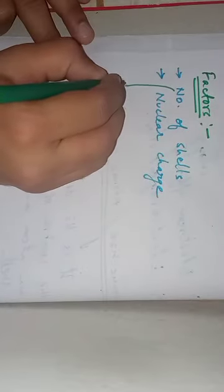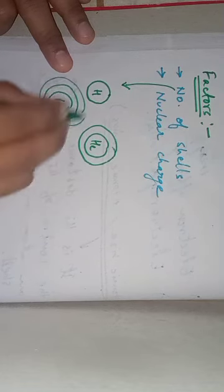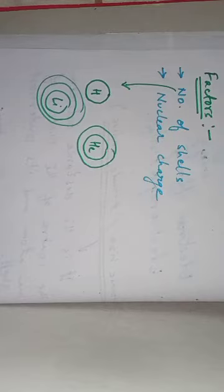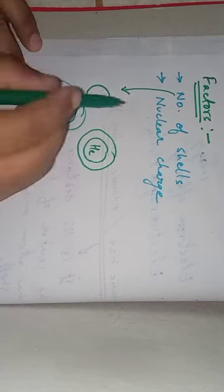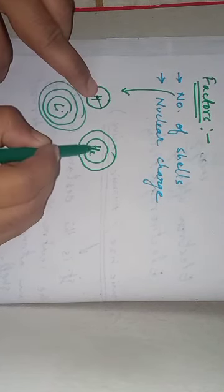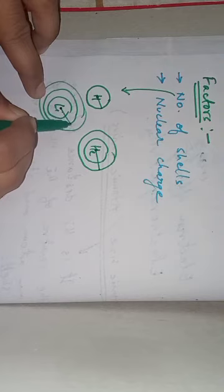How does atomic size depend upon number of shells? Hydrogen has only one shell, helium has two shells, lithium has three shells. From the orbital structures of these different elements, you can see which one will be bigger in size, because more the number of shells, greater the distance between the center of the nucleus and the outermost shell, and therefore greater is the atomic size.